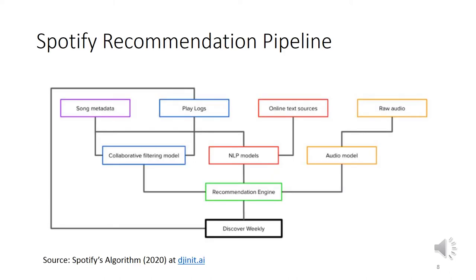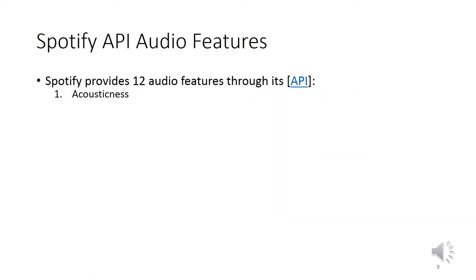To get an answer, we picked Spotify, since it is the major player and provides a public API. From what is publicly known, Spotify models its users' musical tastes by mining data from several different sources — initially from listening data and playlists using collaborative filtering, but nowadays also including natural language processing and even information from the audio content itself, from the audio signal.